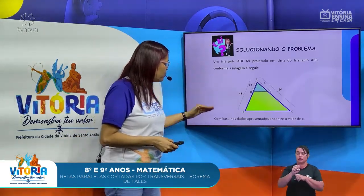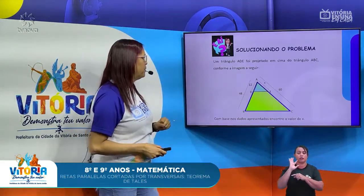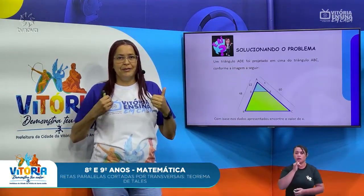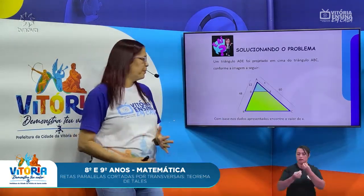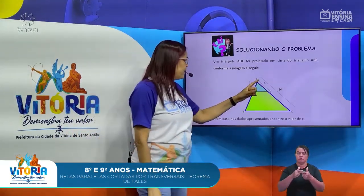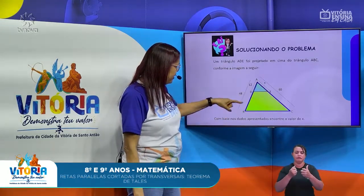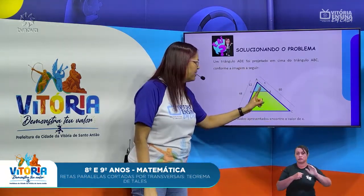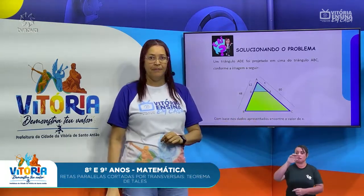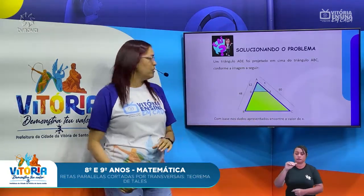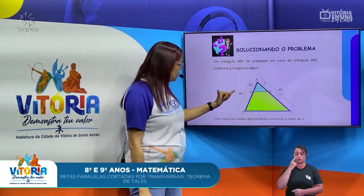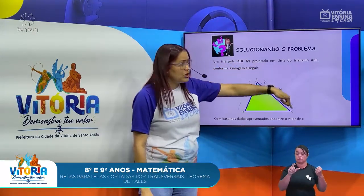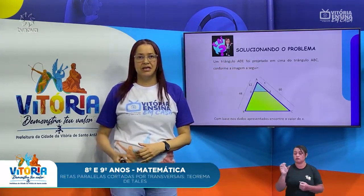Vamos agora resolver o nosso problema. Com aquele exemplo anterior, já tenho todo o caminho para resolver o problema. A gente pode perceber que AB está para AD, assim como AC está para AE. Então, eu vou ter: 12 está para 48, assim como X está para 60.